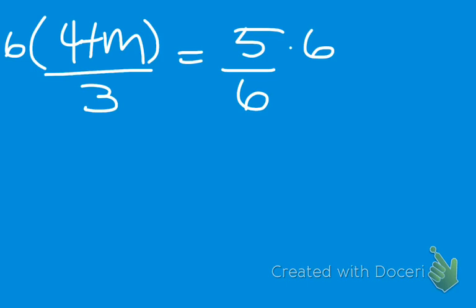Okay, so then it'd be 24 plus 6m over... We're actually going to reduce this first. Right, so it'd be 2. Yes.